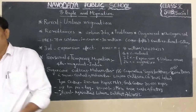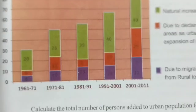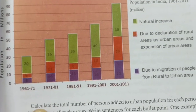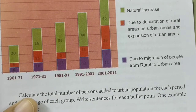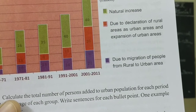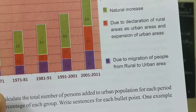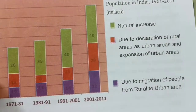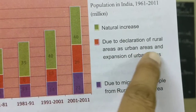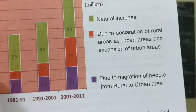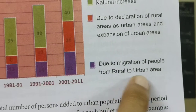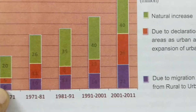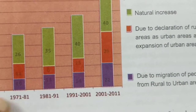Now I want to show you the bar graph from the lesson. This bar graph covers the period from 1961–71 to 2001–2011. The colors represent: natural increase, reclassification of rural areas to urban, expansion of urban areas, and migration of people from rural to urban areas.